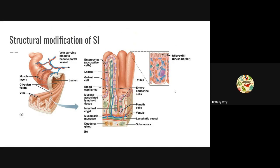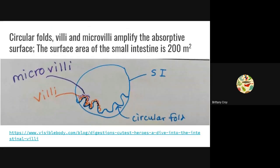These are specific structural modifications that allow the small intestine to be good at digesting and absorbing. The main benefit of the circular folds, the villi, and the microvilli is that they create a much larger surface area for absorption. In fact, the average surface area of the small intestine is 200 square meters, which is the size of a tennis court.